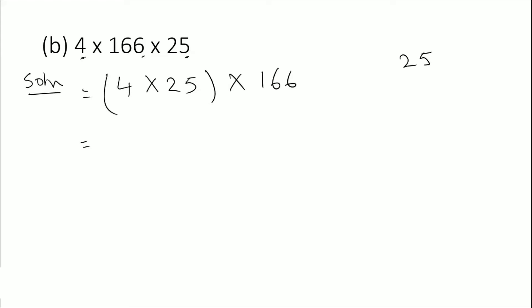25 times 4 equals 100. 100 times 166, so again we'll multiply 166 by 1 and put two zeros. The answer is 16,600. This is the answer for the second one.